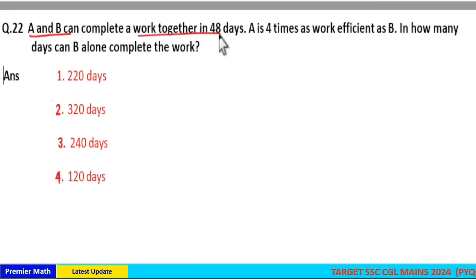A and B can complete a work together in 48 days. A is 4 times as work efficient as B. In how many days can B alone complete the work?